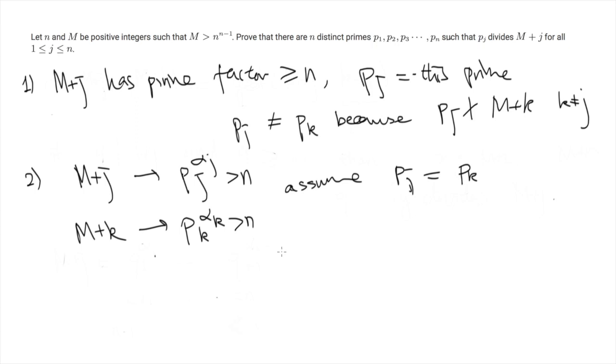Well, by definition, Pj to the power alpha j is larger than n. And also Pk to the power alpha k is larger than n. So now if we write down the GCD between these two numbers.